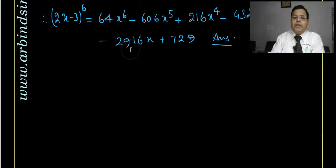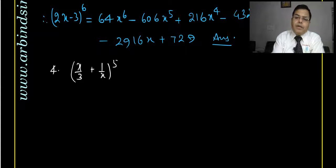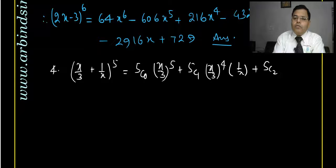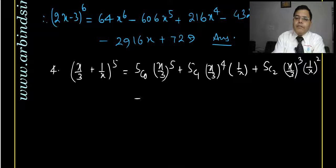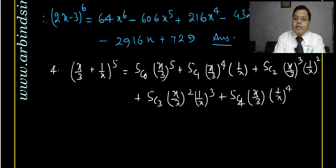Question number 4 is: expand x by 3 plus 1 by x, whole to the power 5. Again in the similar fashion, we write: 5C0 times x by 3 to the power 5, plus 5C1 times x by 3 to the power 4 times 1 by x, plus 5C2 times x by 3 squared times 1 by x squared, and so on up to 5C5 times 1 by x to the power 5.